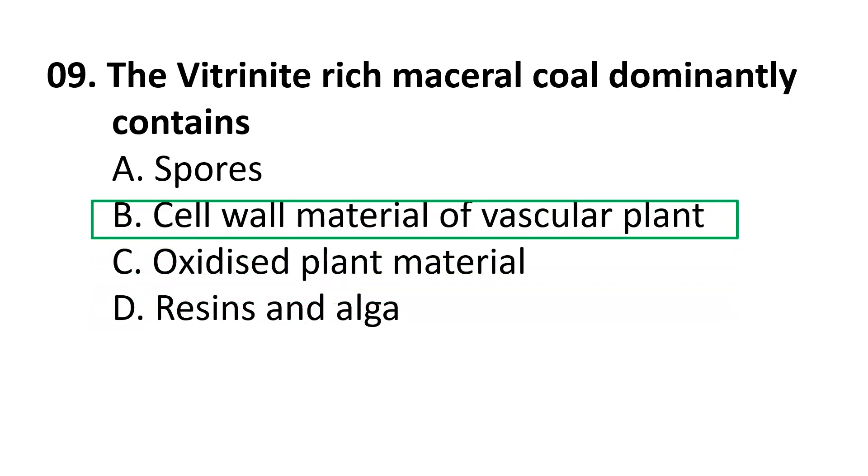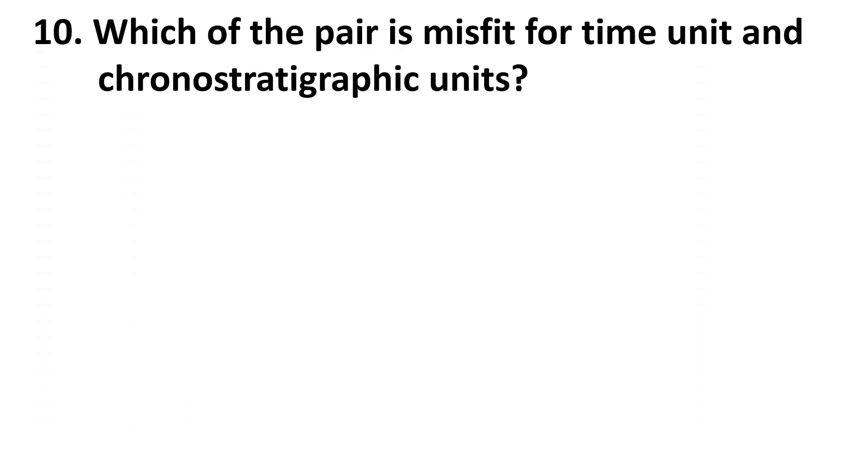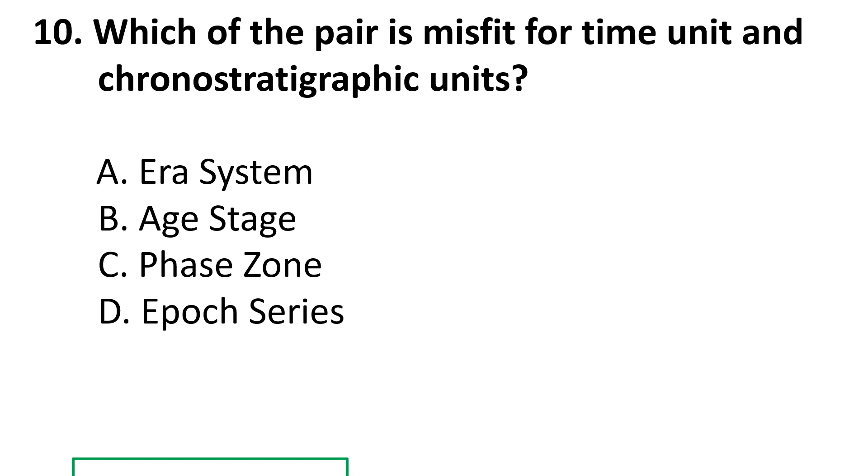In the question: which of the pair is a misfit for time unit and chronostratigraphic units? Choices are A Era-System, B Age-Stage, C Phase-Zone, D Epoch-Series. The correct answer is Era-System.